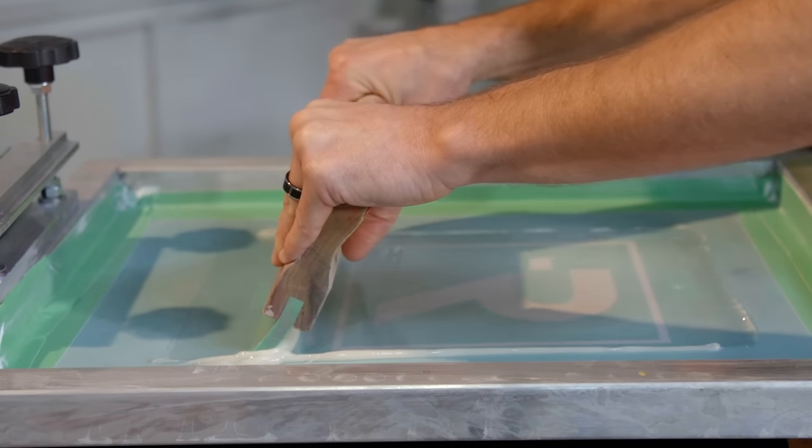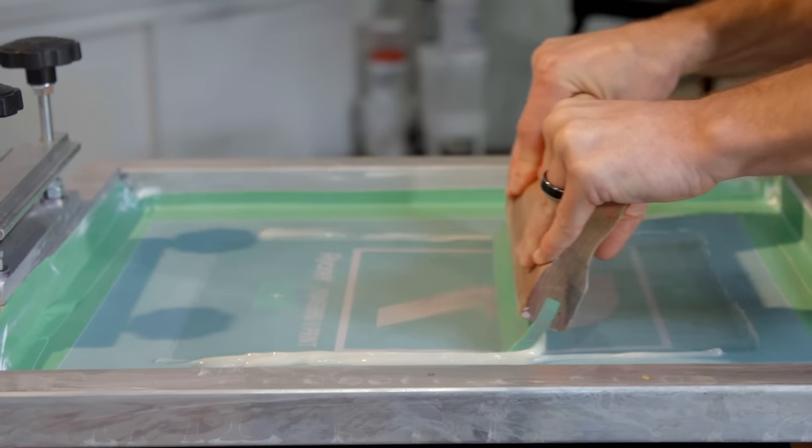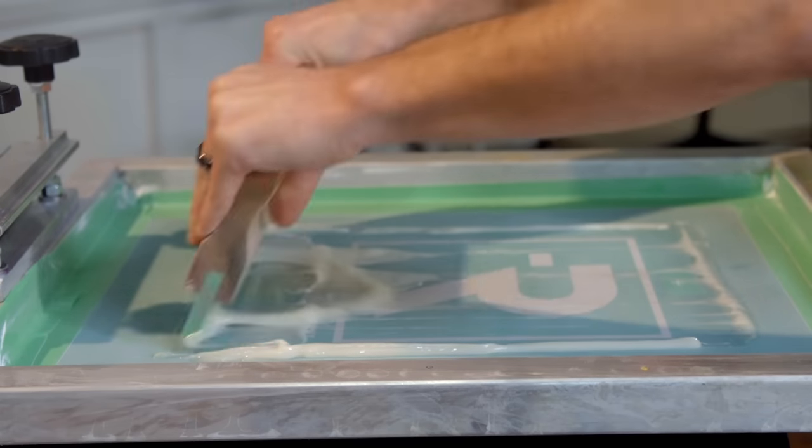Most of the time, for standard foil applications, you can just do two passes. However, if you're wanting to create some density, you can print flash print and add more ink on top.